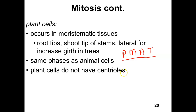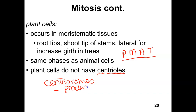One major difference is that plant cells don't have centrioles. Centrioles produce those spindle fibers, but plant cells do have centrosomes. A centrosome is what contains our centrioles. In animal cells, the centrosomes contain our centrioles, and the centrioles produce our spindle fibers. In plant cells, the centrosomes themselves produce the spindle fibers.